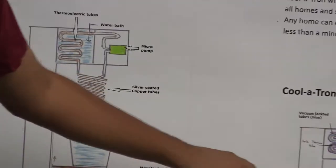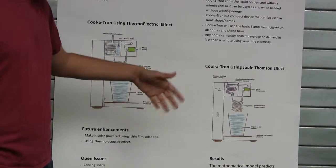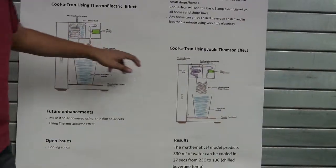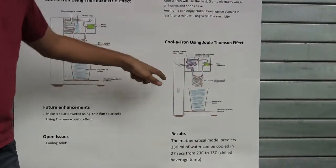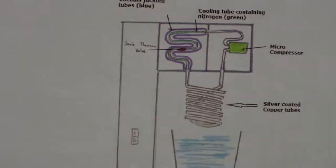In the other method, if you notice, the framework and layout look exactly the same. What differs is the mechanism of cooling. Rather than thermoelectric tubes, I have vacuum-jacketed tubes and a JT valve. The coolant in this case would be a gas.